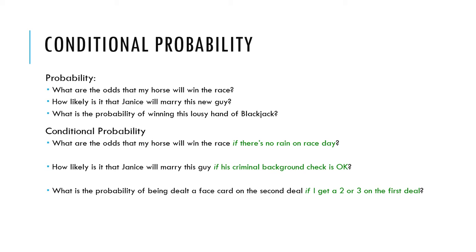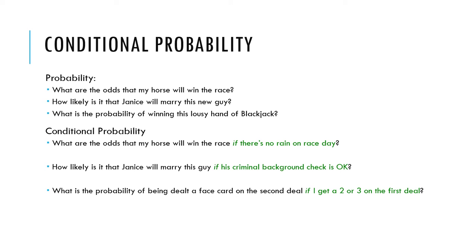You'll notice that the second thing in the sentence actually has to come first. First there has to be no rain on race day, then we can worry about the horse winning. First, the criminal background has to be okay, then we can worry about Janice marrying this guy. So the condition actually comes first. In conditional probability, one event or outcome is the condition, and the other event or outcome is the thing we are concerned about — if the condition is satisfied.